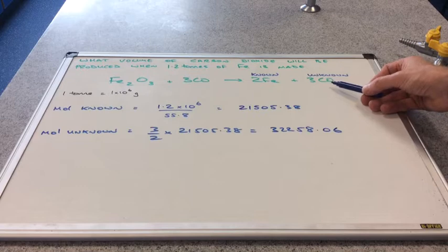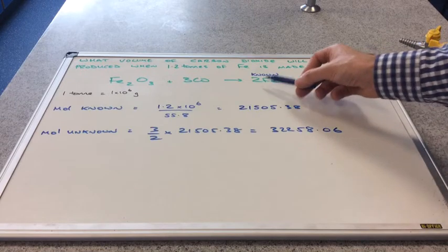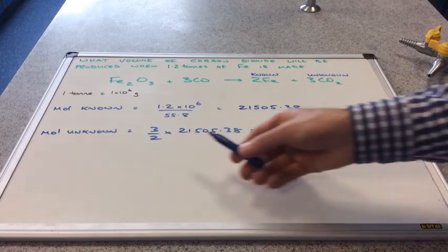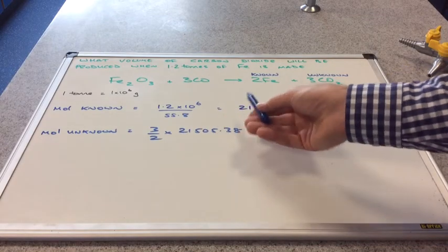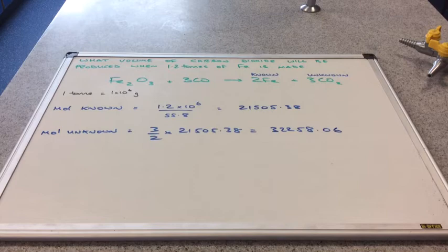How many times more? Well it's just 3 over 2 times that. So 3 over 2 times the moles of this gives us the moles of carbon dioxide, and that comes out at that value there.